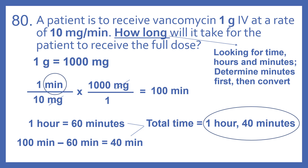So, we're wanting to know how long — we're looking for time on this question in hours and minutes. First we're going to determine the minutes and then convert to hours and minutes. We know that 1 gram equals 1,000 milligrams. If our rate is 1 minute per 10 milligrams, we're wanting time, so we have minutes on the top, times 1,000 milligrams over 1. Milligrams on top and bottom cancel, leaving us with minutes. Doing the math: 1 times 1,000 is 1,000, divided by 10 times 1 is 10, giving us 100 minutes.